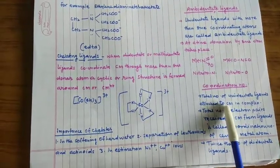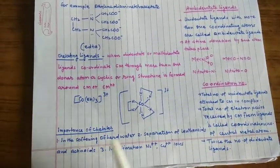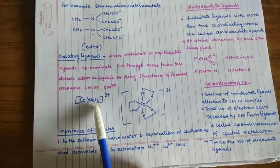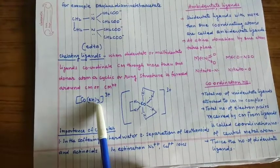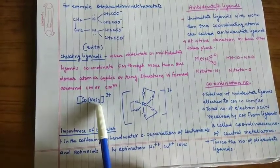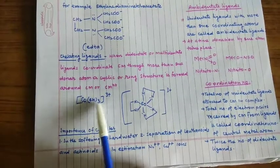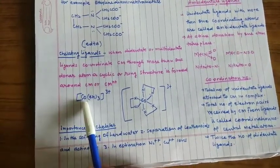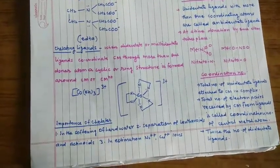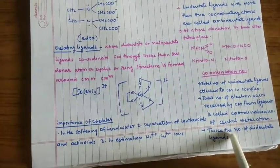Coordination number किसका होगा? Central metal atom का। अगर वो bidentate ligand है जैसे यहाँ EN bidentate ligand है, तो जितने ligand हैं उसका two से multiply कीजिये क्योंकि हर ligand दो pair दे रहा है। तो तीन ligand छः pair देंगे तो यहाँ coordination number Co का क्या हो जायेगा? Six हो जायेगा। तो अगर bidentate ligand है तो उसको twice कीजिये जितने ligand हैं उसका twice।